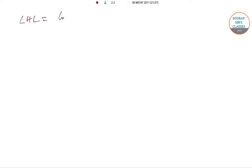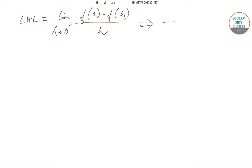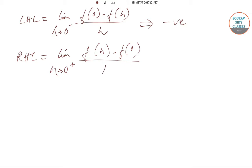The left-hand limit is: limit as h tends to 0⁻ of [f(0) − f(h)] / h. Since f(h⁻) < f(0), the numerator f(0) − f(h) is positive, but h is negative, making the expression negative. The right-hand limit is: limit as h tends to 0⁺ of [f(h) − f(0)] / h. Since f(h⁺) > f(0), the numerator is positive and h is positive, so this expression is positive.